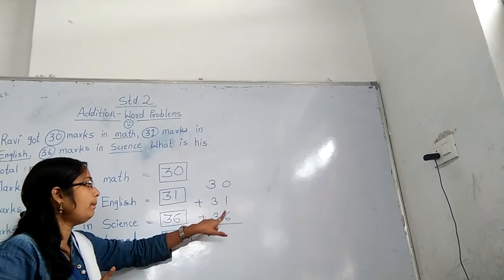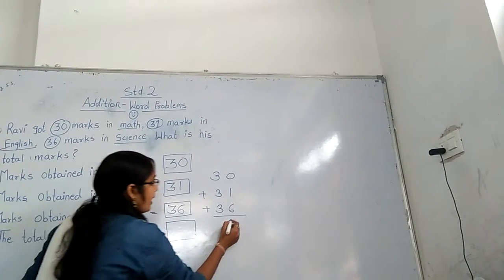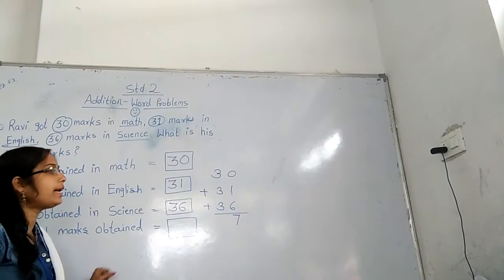0 plus 1 equals 1, and 1 plus 6 equals 7. So write here 7.